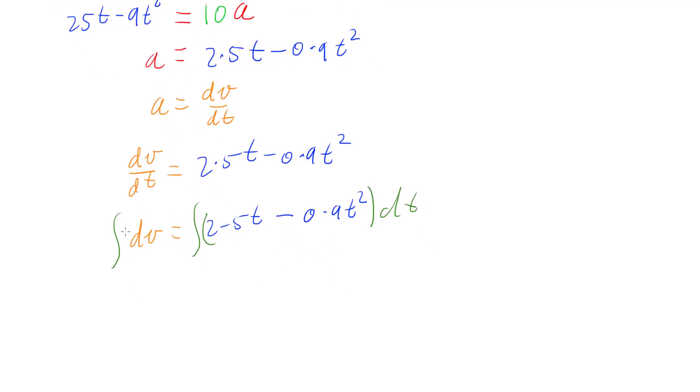The integral of 1dv is just going to be v equals 2.5t with respect to t is going to integrate to 2.5t squared over 2. Minus 0.9t squared is going to become 0.9t cubed over 3. And of course we'll have a plus c, a constant of integration.